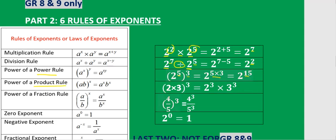The power of product rule means: if you have a product of two numbers inside the brackets, both numbers' exponents should be multiplied by the exponent outside the bracket. For division it works the same way — the exponent outside the bracket must be distributed to both numbers that are divided.